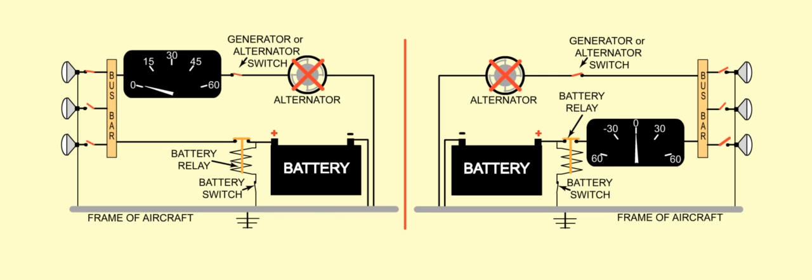To recap the major differences between the systems, with the generators working, as you turn on more electrical loads, the reading on the left-zero ammeter will increase as the generator load increases, whereas the reading on the center-zero ammeter remains the same, only indicating the current flowing to the battery.